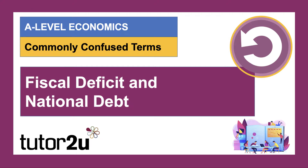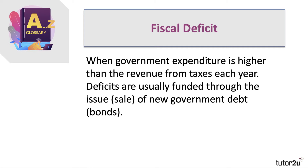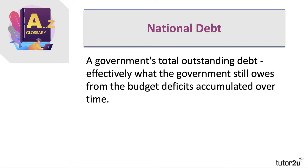Here's another commonly confused combination: fiscal deficit and national debt. The fiscal deficit is a flow concept — it occurs when in a given year government spending on things like education, defense, healthcare, and welfare is greater than the revenue received from direct and indirect taxes. When a government runs a deficit, it is usually funded through the issue or sale of new government debt, also known as bonds.